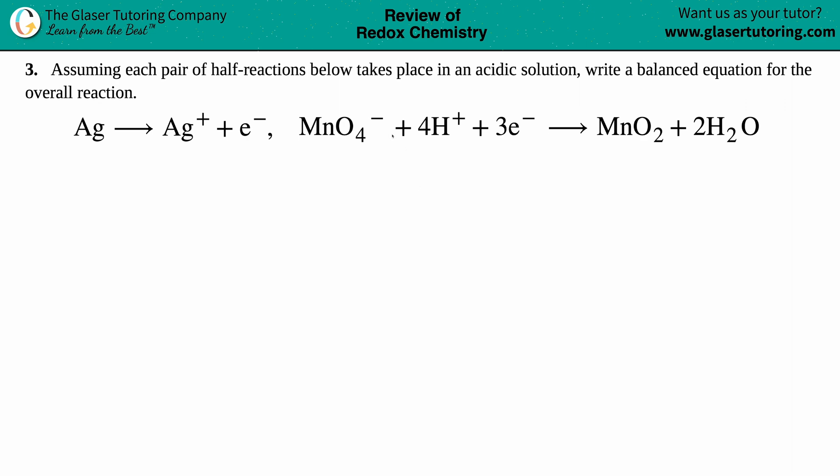Number three: Assuming each pair of half-reactions below takes place in an acidic solution, write a balanced equation for the overall reaction. We have two half-reactions here. We have Ag yields Ag+ plus one electron, and then we have MnO4- plus 4H+ plus 3 electrons yields MnO2 plus 2H2O.